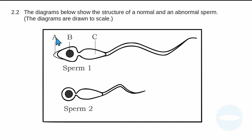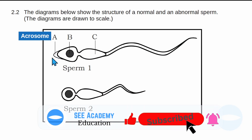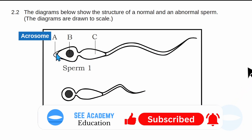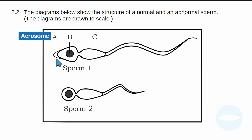Let me label the parts. Part A is the acrosome. Its function is that it contains enzymes, and those enzymes help with penetrating the ovum during fertilization. That is the function of the acrosome.